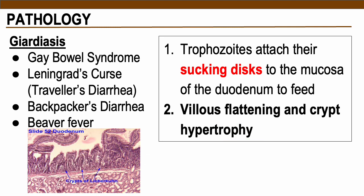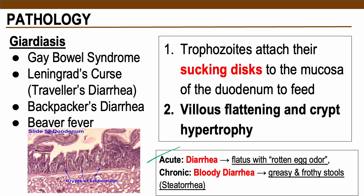In terms of the signs and symptoms, for acute infection this is associated with diarrhea with increased production of gas (flatus) with a rotten egg odor. For chronic cases, patients suffering from severe giardiasis produce light-colored stools with a high fat content, caused by secretions produced by the irritated mucosal lining. This is associated with bloody diarrhea with increased greasy and frothy stool due to high fat content — what we call steatorrhea.